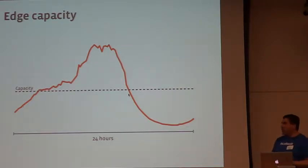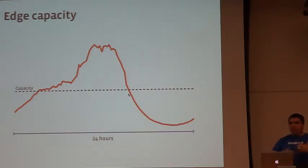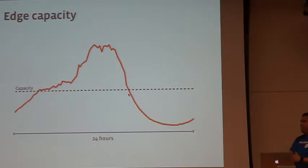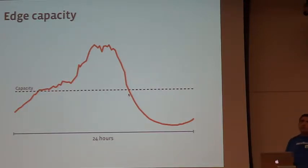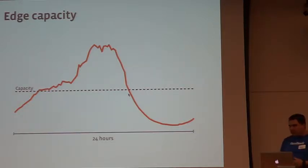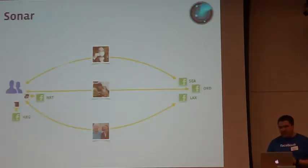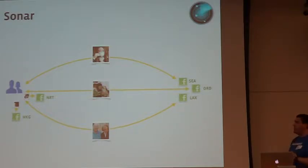One of the ways Cartographer knows which POP to use is: when you have a resolver like Comcast Detroit, we try to create a list of the best POPs to go to. The best would be Chicago, then maybe New York. To create that list, we have a system called Sonar — which we also built in-house.